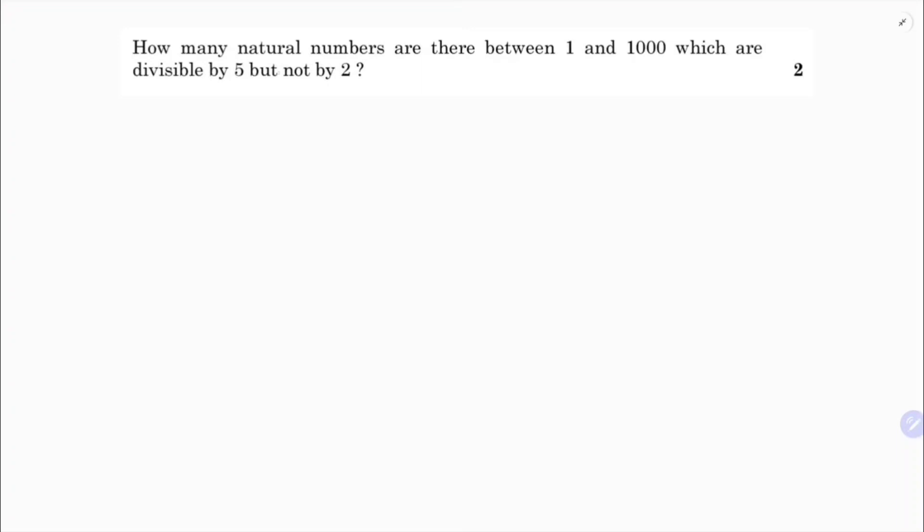How many natural numbers are there between 1 and 1000 which are divisible by 5 but not by 2? The numbers which are divisible by 5 between 1 and 1000 will be like 5, 10, 15, 20, 25, and so on.